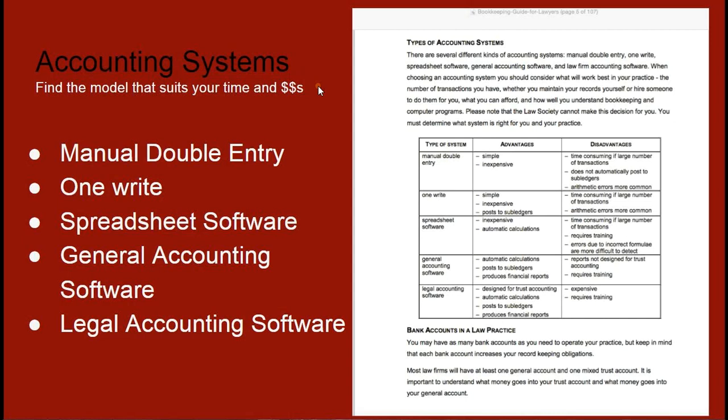Spreadsheet software is still a document you have to manage and maintain manually, entering records as you invoice and transact with your bank account. The next evolution is general accounting software, which does automatic calculations, lets you post ledgers, journals, and sub-ledgers, and produces documentation for audit requirements. However, it was not purpose-built for a legal firm and does not highlight the specific bookkeeping guidelines, especially for firms that deal with trust money.